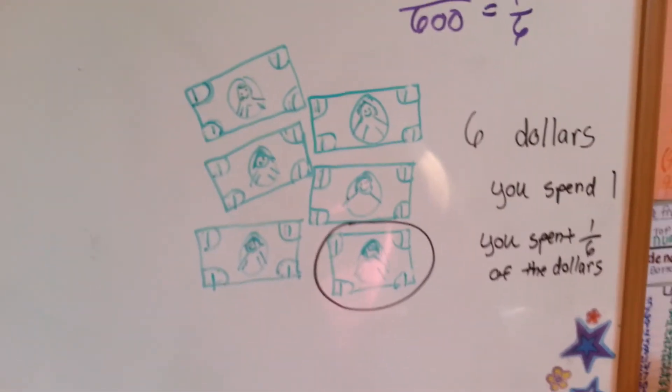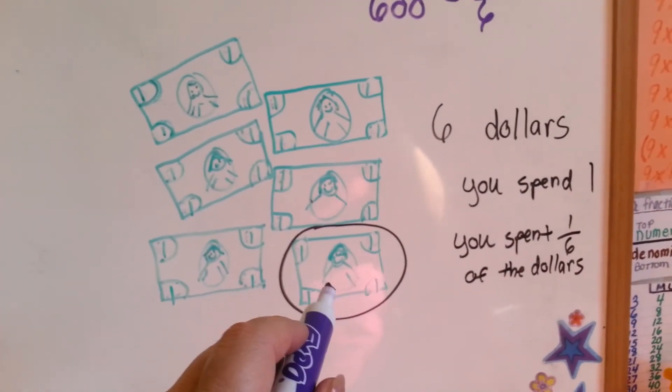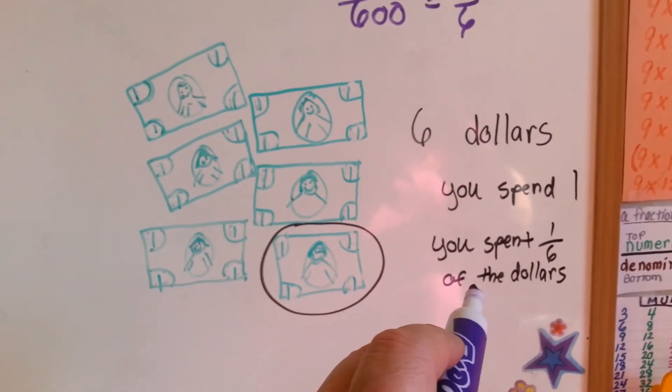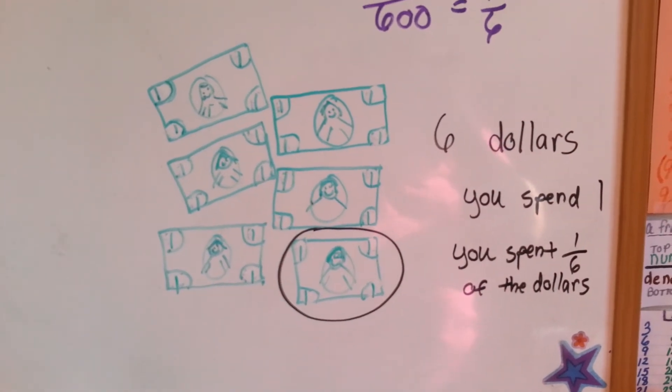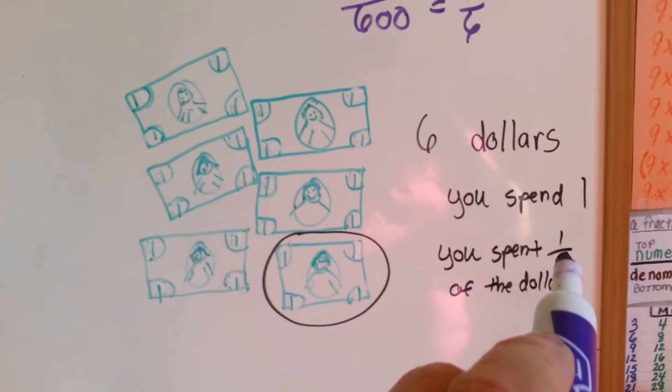Now, there's six dollars. If you spent one of the dollars, you would have spent one-sixth of your money. You would have spent one out of the six. One-sixth.